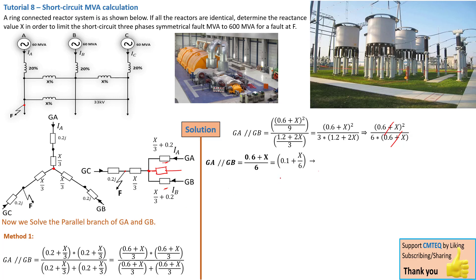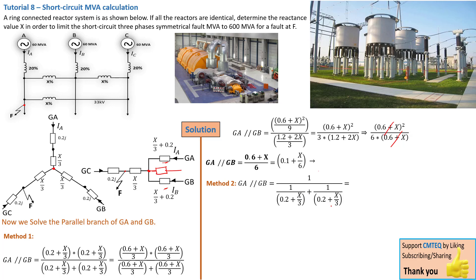Method 2 is quite a short one, usually applicable if you've got more than two parallel branches. It is simply 1 over (1 over the expression on one parallel branch plus 1 over the expression on the other parallel branch). That way, if you've got multiple branches you can just keep adding 1 over whatever is on each branch. From here we can clearly see that we've got a common denominator situation — this denominator and this denominator are exactly the same.